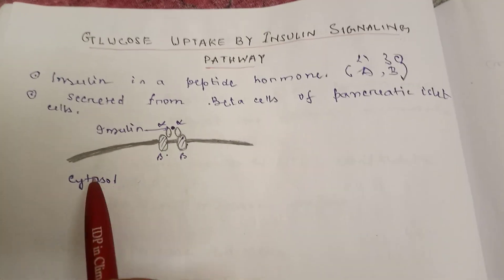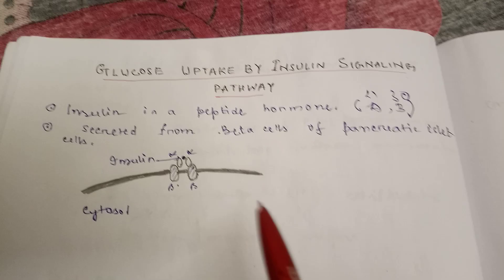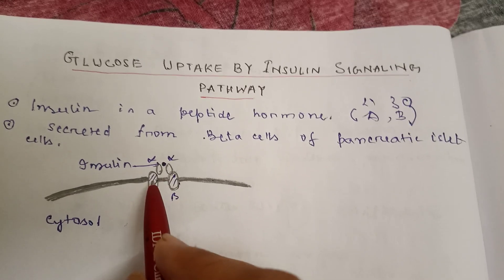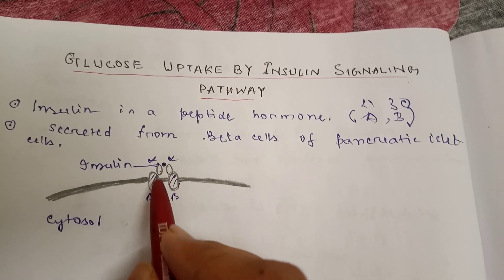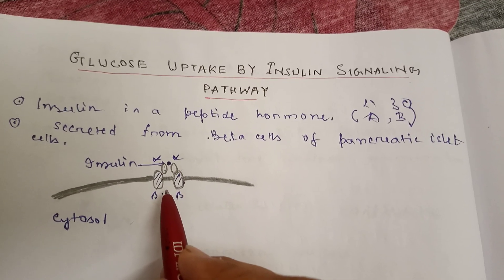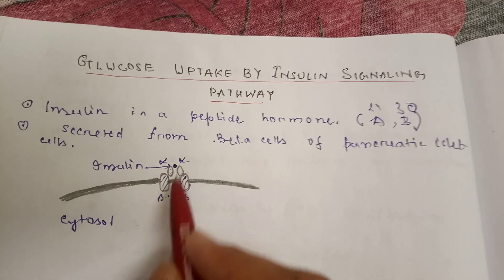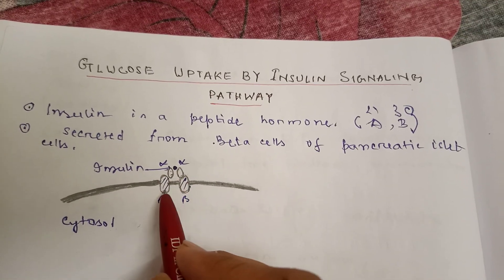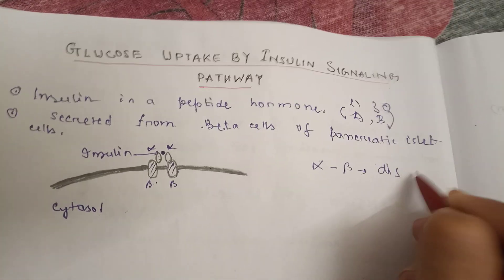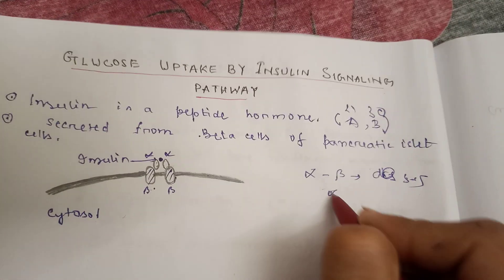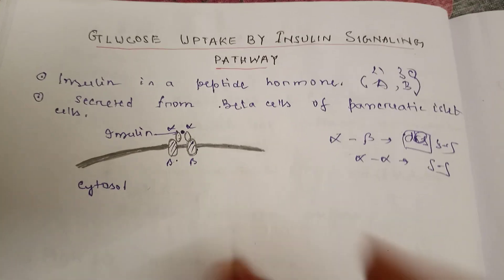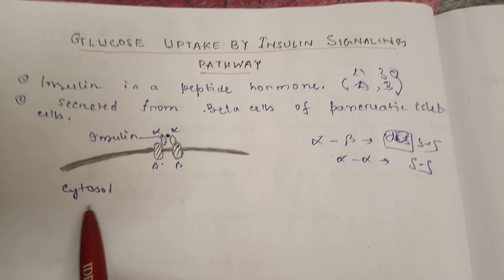Now, coming to the main point — glucose uptake by the signaling pathway. Here you can see the insulin receptor. It is a dimer with two parts: the extracellular parts are alpha subunits and the transmembrane parts are beta subunits. The alpha and beta subunits are linked with disulfide bonds, and the two alpha subunits are also linked with disulfide bonds. The outer part faces outside and the inner part faces the cytosol.